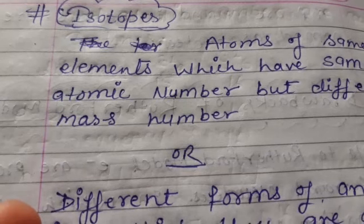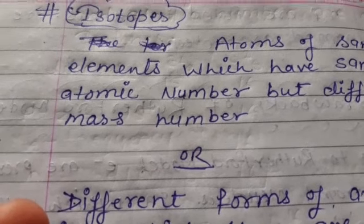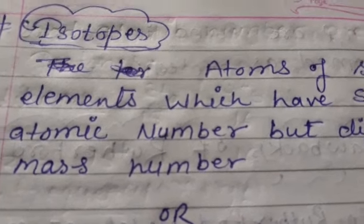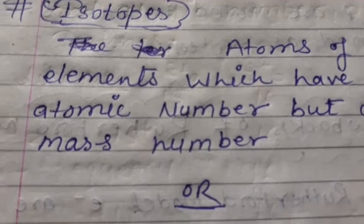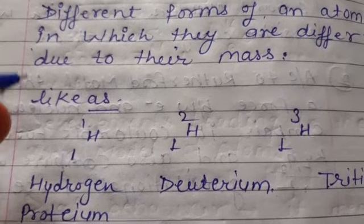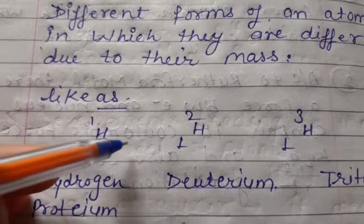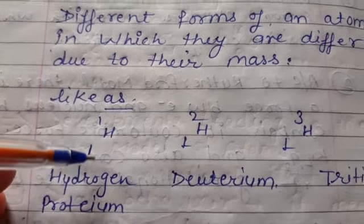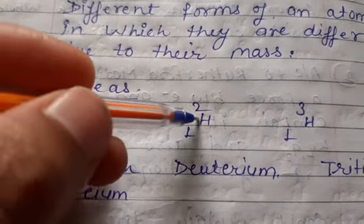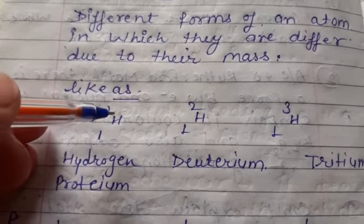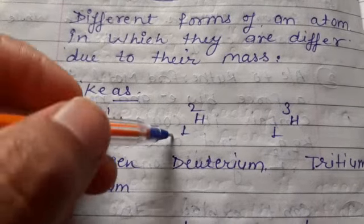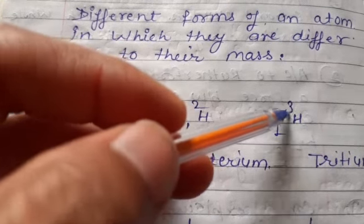After that we need to discuss some concepts related to atoms. The first one is isotopes. For example: ¹H¹, ¹H², ¹H³ — these are various forms of hydrogen. The lower number shows the atomic number and the upper number shows the atomic mass. These are various forms of an atom which differ due to atomic mass.